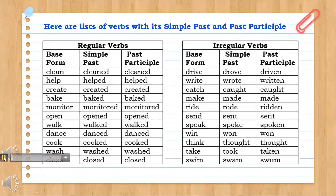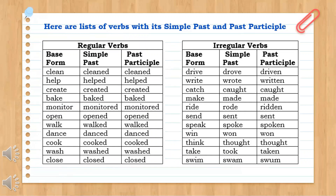For your practice, here are the lists of verbs with their simple past and past participle. Base form: clean; simple past: cleaned; past participle: cleaned. Notice we only add 'd' or 'ed' to form the past participle of regular verbs.